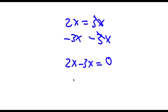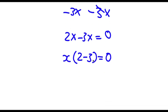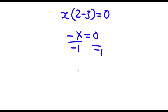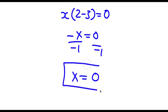Now if I factor out x I get x times 2 minus 3 is equal to 0. 2 minus 3 is negative 1, so now I have negative x is equal to 0. If I divide both sides by negative 1, I get x is equal to 0 divided by negative 1 is 0. So my answer is x equals 0.